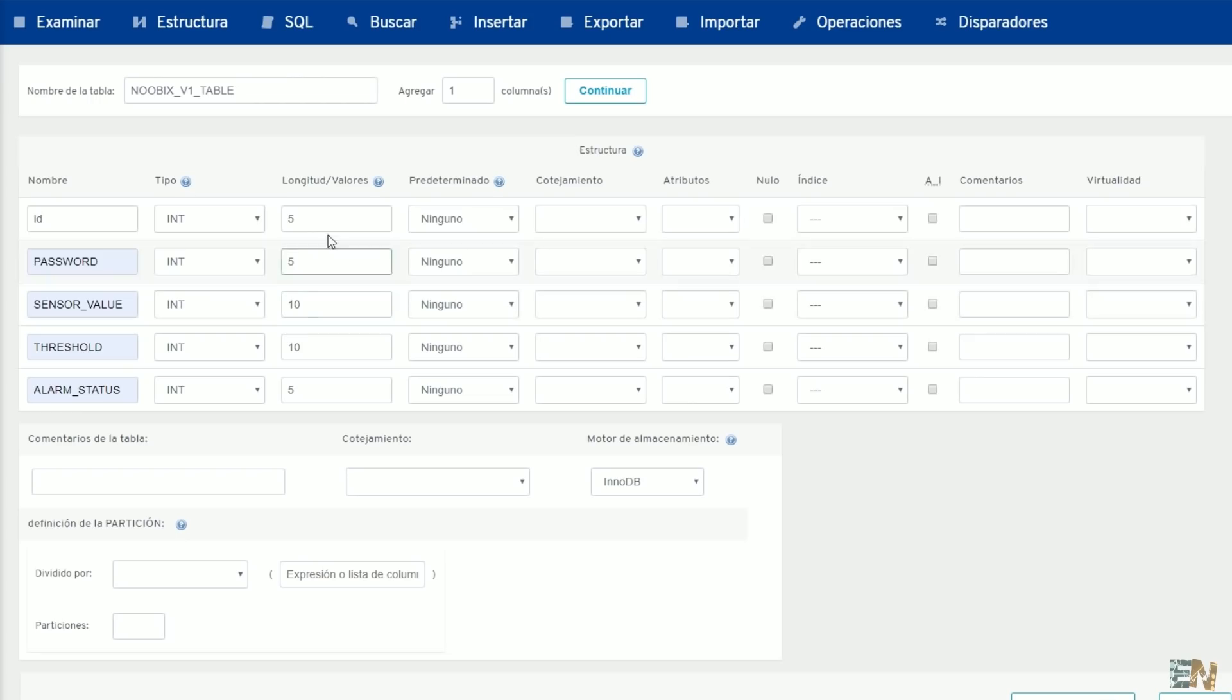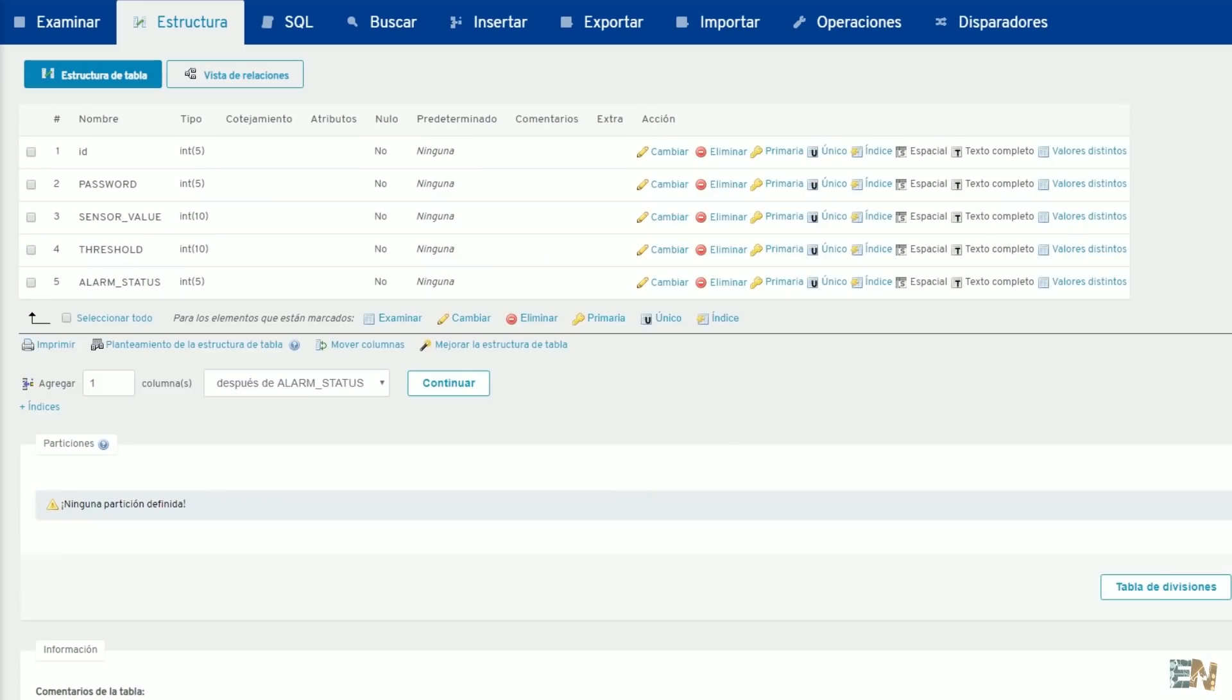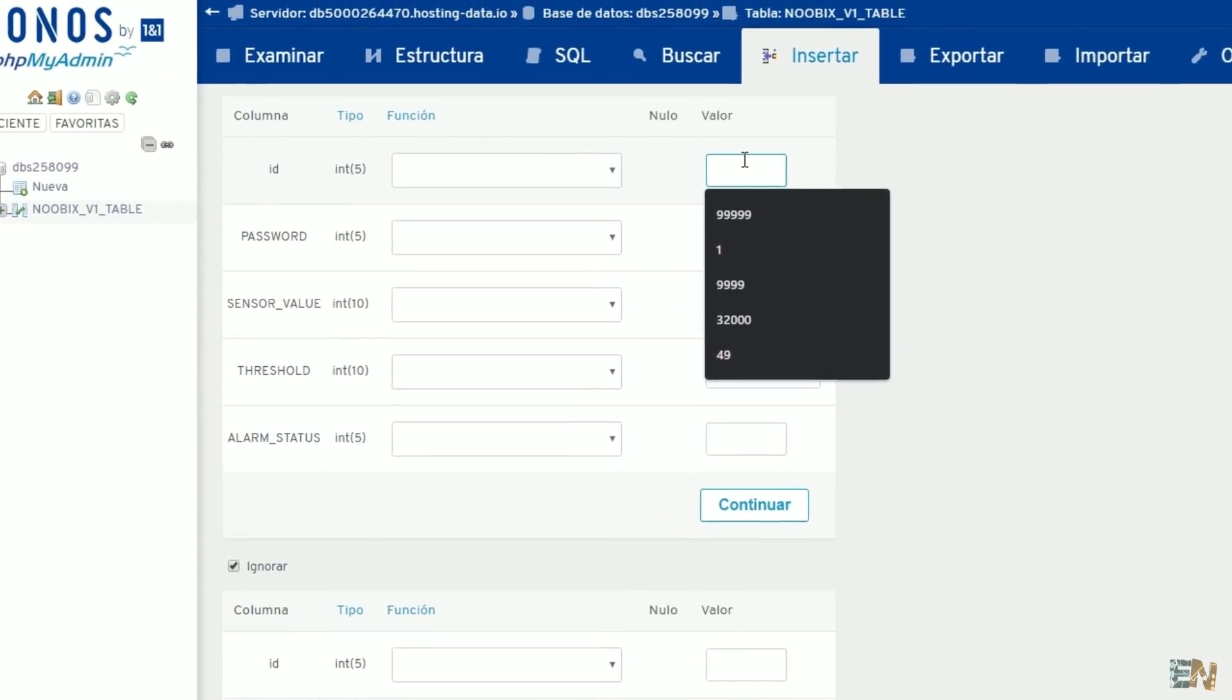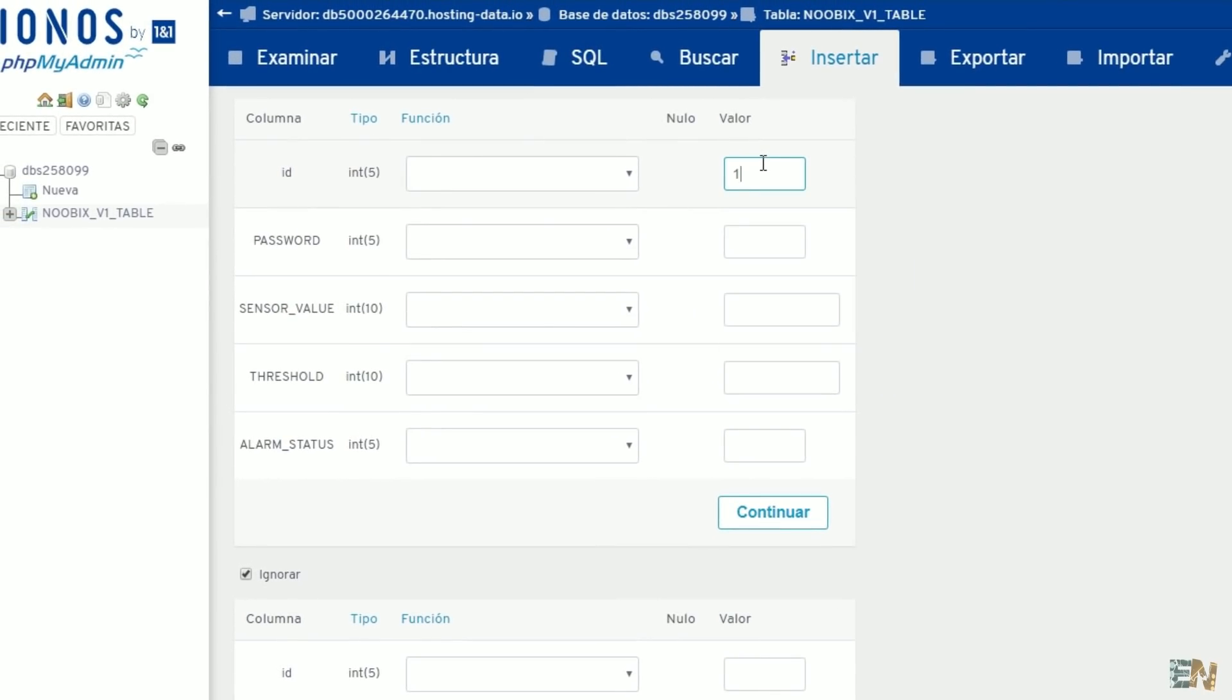Now we have to insert at least one user ID and one password. For that go to insert. It can be any number you want, but with a maximum of 5 characters. I insert ID 1 and the password of 12345. Okay, so now the database is ready.